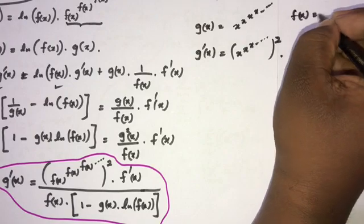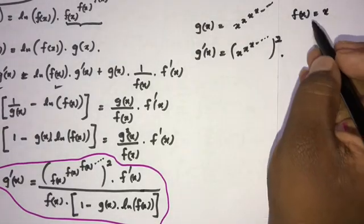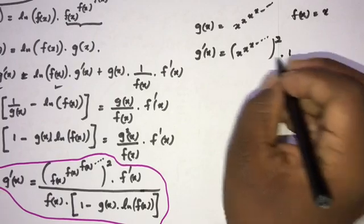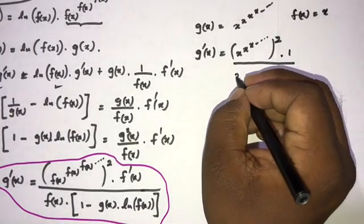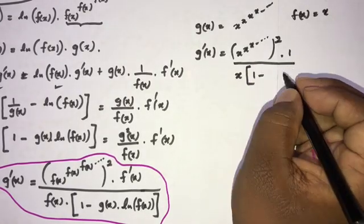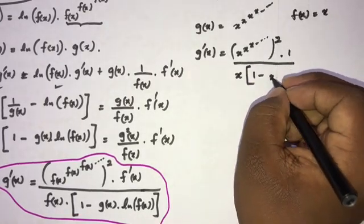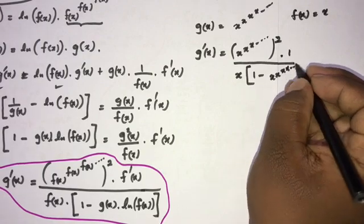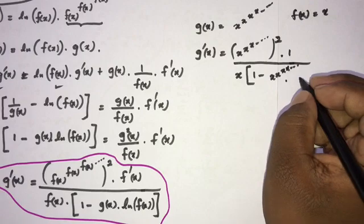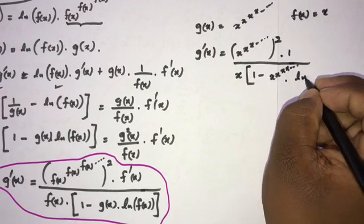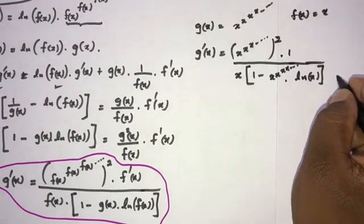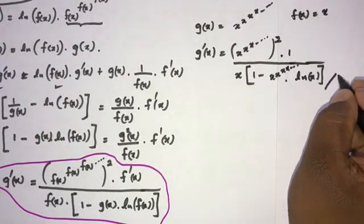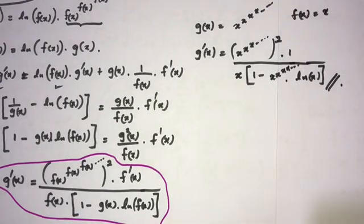So g'(x) equals [x^x^x^...] squared, all over x times (1 minus x^x^x^... times natural log of x). This is the first example: the derivative of the infinite power tower x^x^x^...